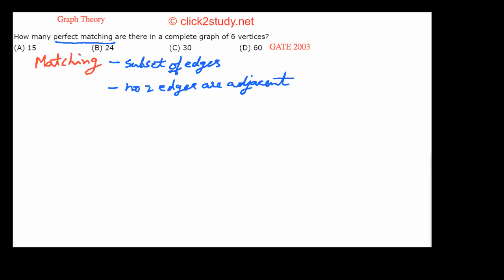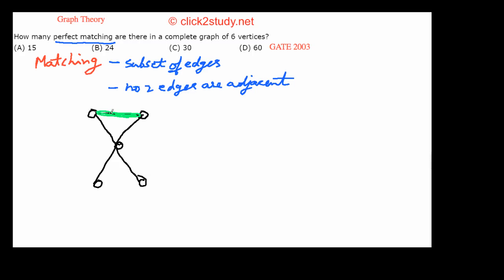Suppose I draw some graph with vertices and edges. You have to give a matching in this graph. First of all, it is a subset of edges, so we choose a subset of edges where no two edges are adjacent. Suppose I choose this edge — that is itself a matching because it is a subset of the edges of this graph and it is not adjacent to any other edge I have chosen.